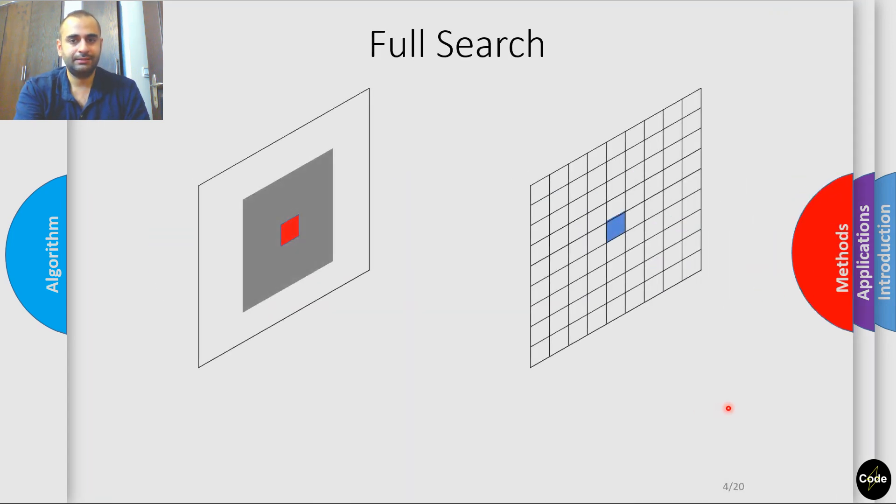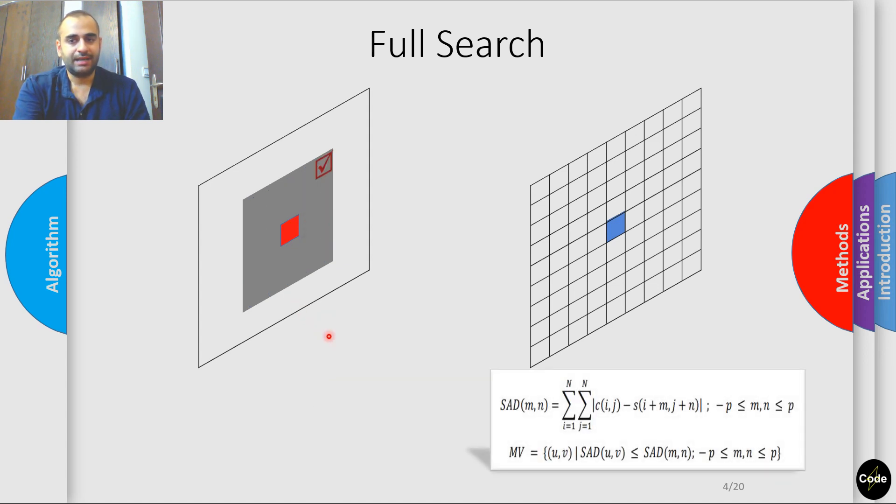So now let's talk about the methods. If we examine all the blocks within the search window, we achieve the highest accuracy because we are checking every possible block. However, this comes at the cost of extensive computational resources. This algorithm is known as full search.